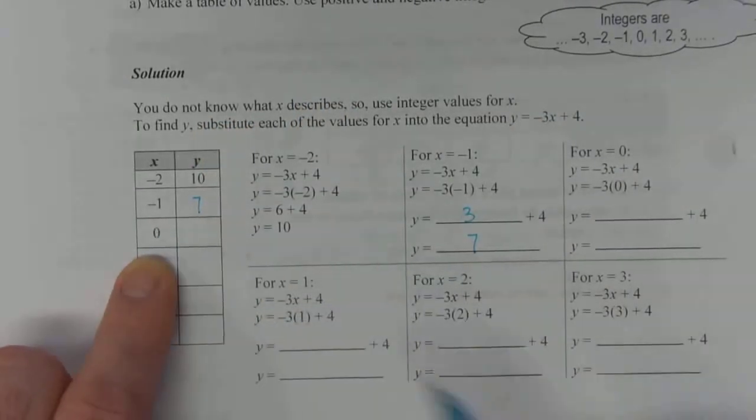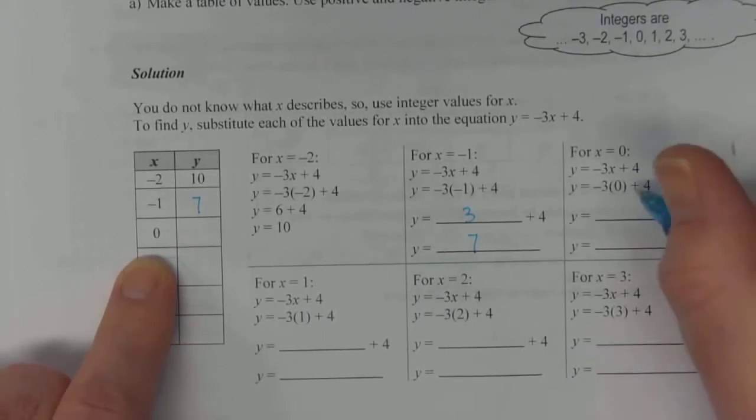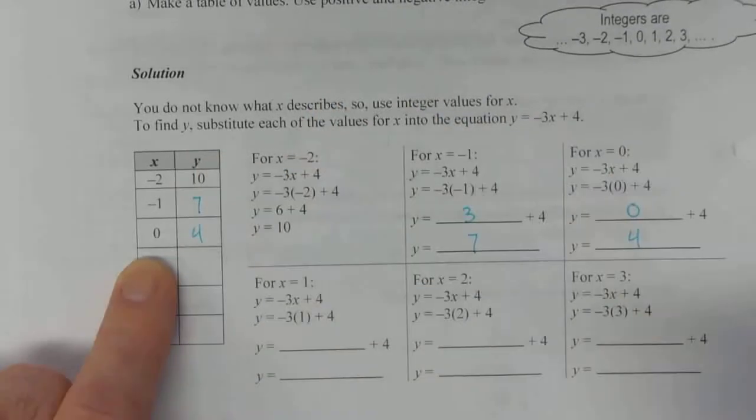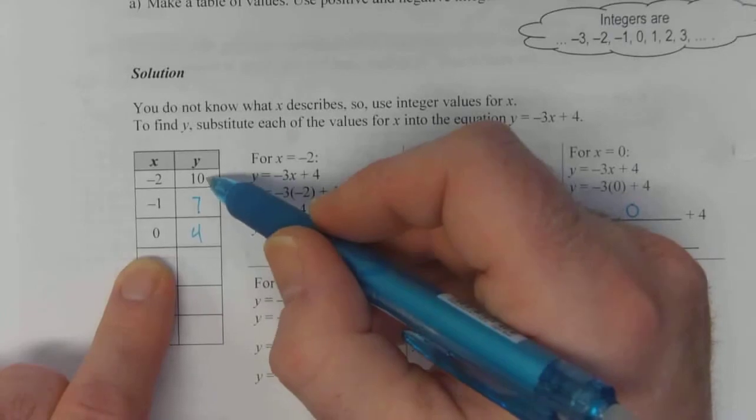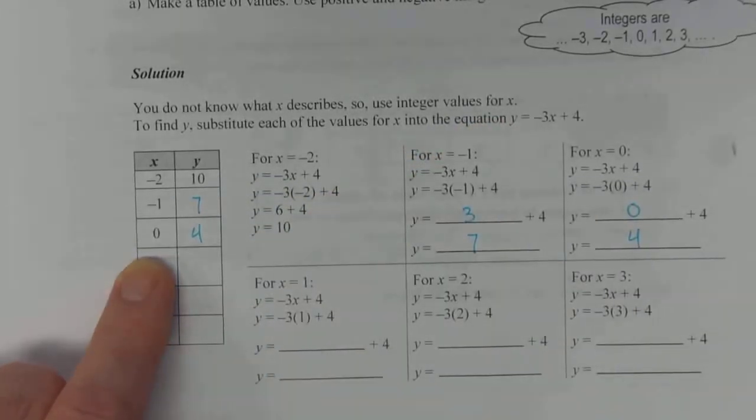And then for x equals 0, same process. Substitute 0 in. Negative 3 times 0 becomes 0. Add 4 to it, and you get 4. And at this point, you probably start to see a pattern. It's going down by 3's. But we'll continue this work just to confirm.